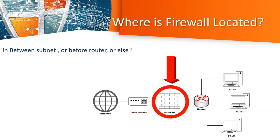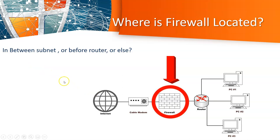Now that we understand the basic picture, the question is: where is the firewall located and where is the best place to put our firewall? Looking at a standard or common network structure, we have PCs or subnets — Subnet A, Subnet B, Subnet C — and then we have a router. Before the router, we will have a firewall. Then we have a cable modem or router, and further out is the internet cloud.